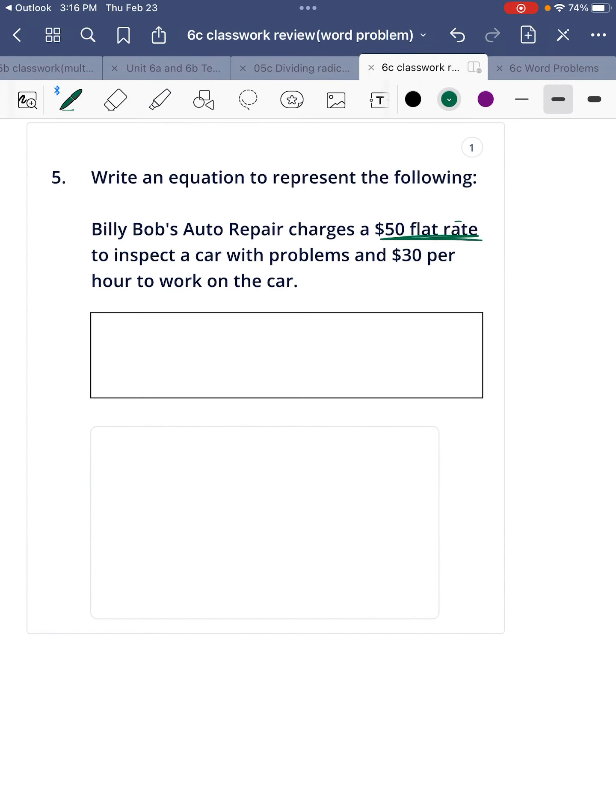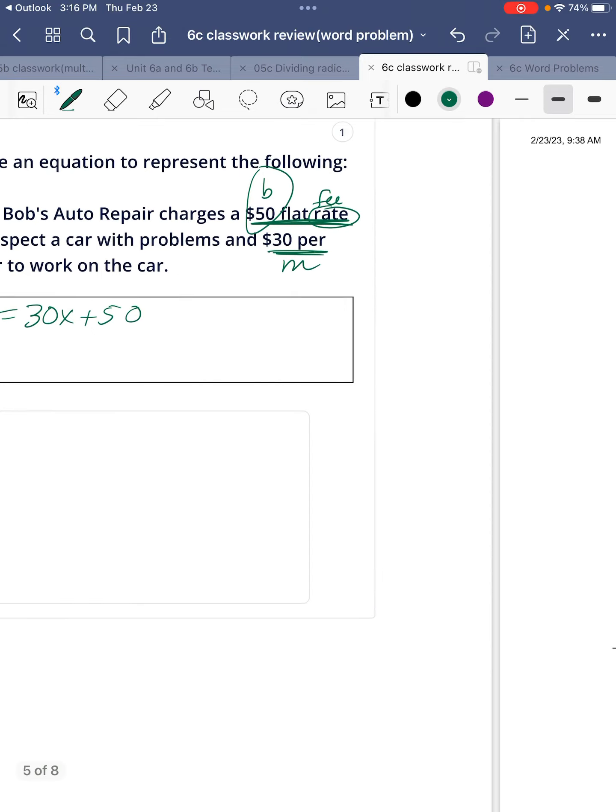Now, number 5. So here we have a flat fee. Flat fee, so that is a one-time thing. So that is your b. And then $30 per hour, so that's going to be your m. So it's going to be y equals 30x plus 50.